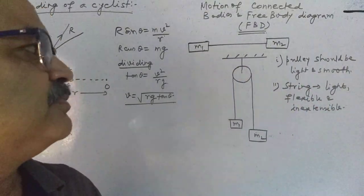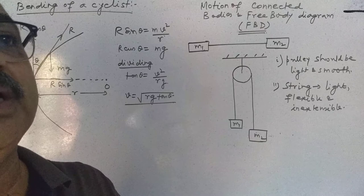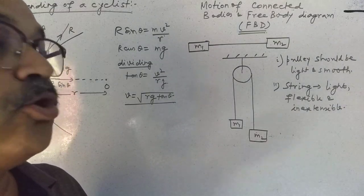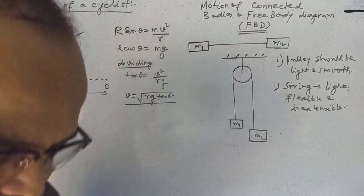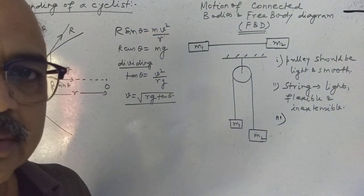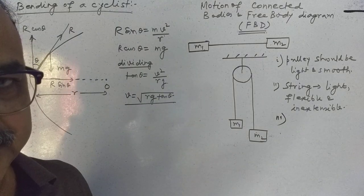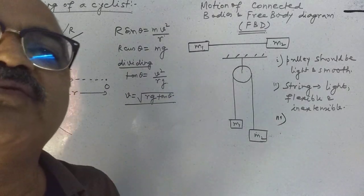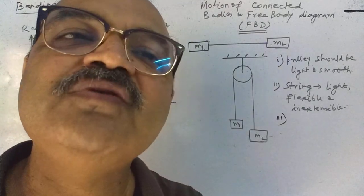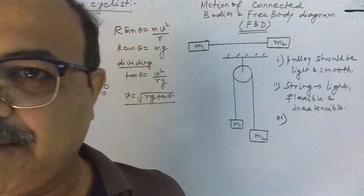The string should be massless, very flexible, and inextensible — there should be no extension when a weight is hanging or it is holding some weight. It should not be elastic. Third point: in all parts of a particular string, the tension will be the same. The tension in the string will always be the same and should always act towards the fixed point.